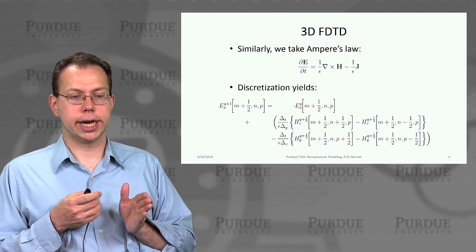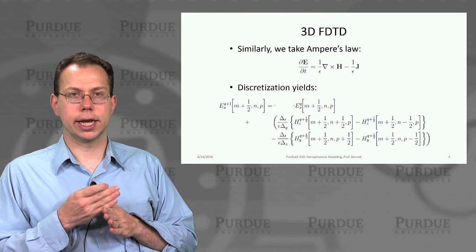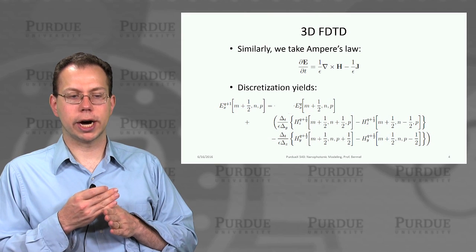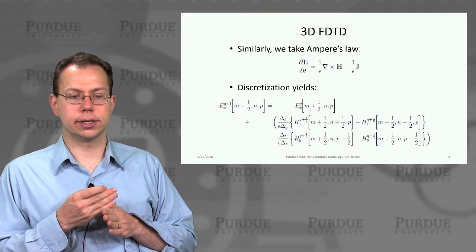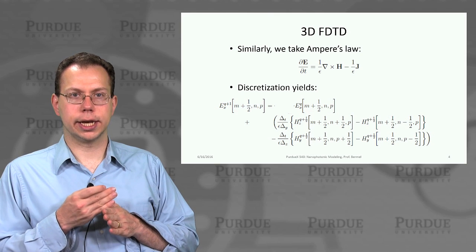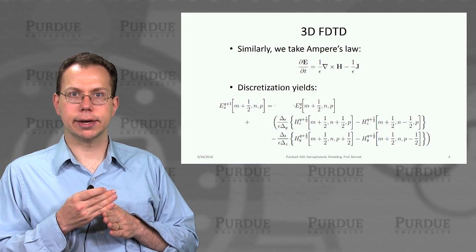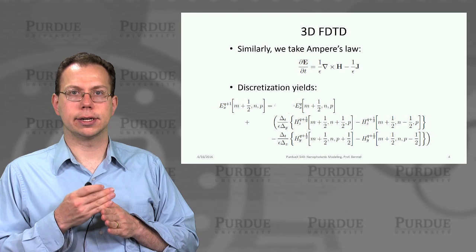So for E_X, we have delta H_Y and delta H_Z. For the E_Y component, we have delta H_X and delta H_Z. And then finally, for the E_Z component, we have delta H_X and delta H_Y.